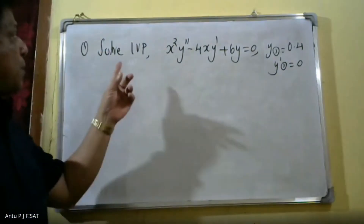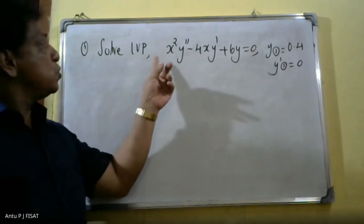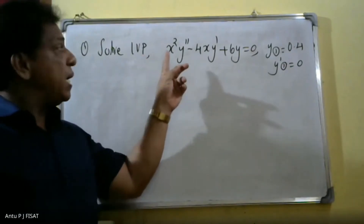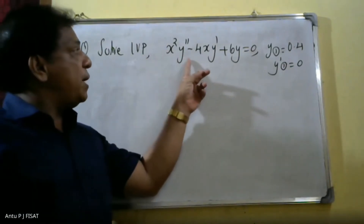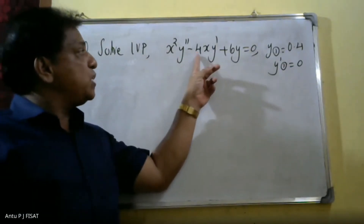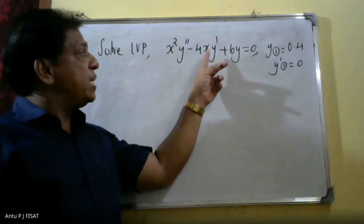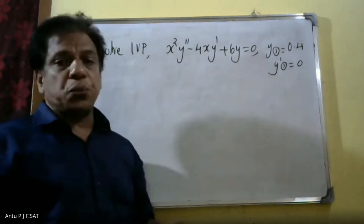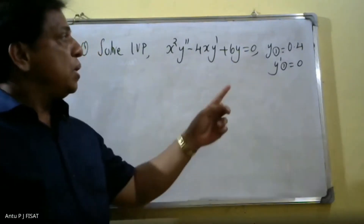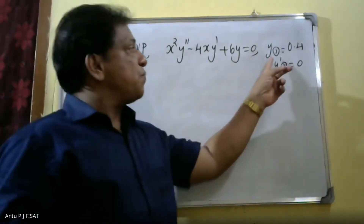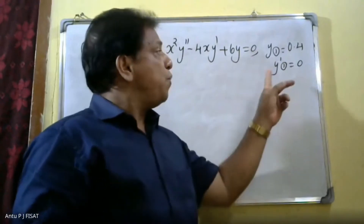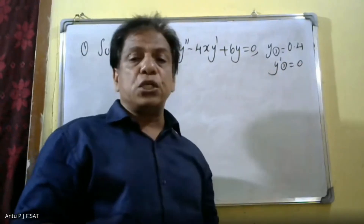The problem is: solve the initial value problem x² y'' − 4xy' + 6y = 0, with initial conditions y(1) = 0.4 and y'(1) = 0.